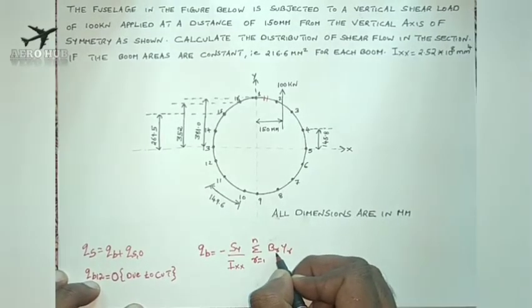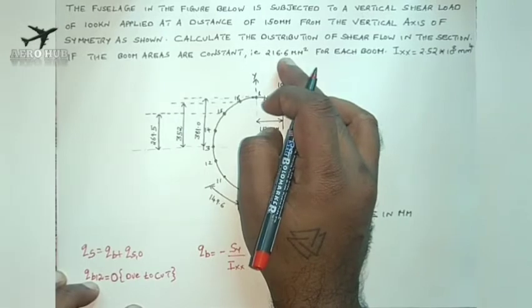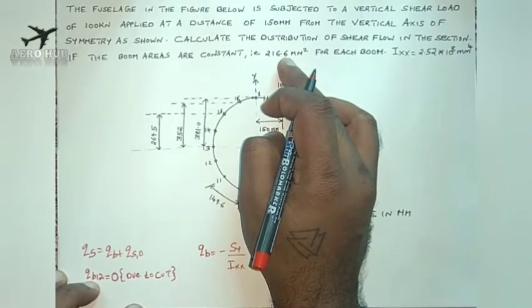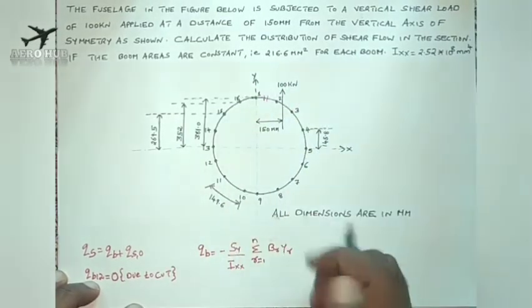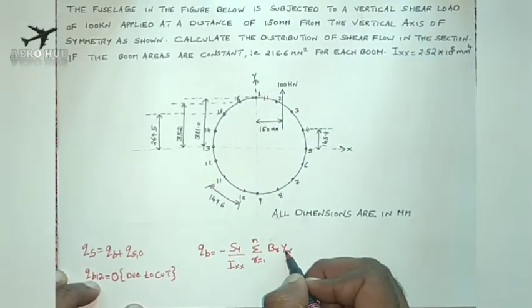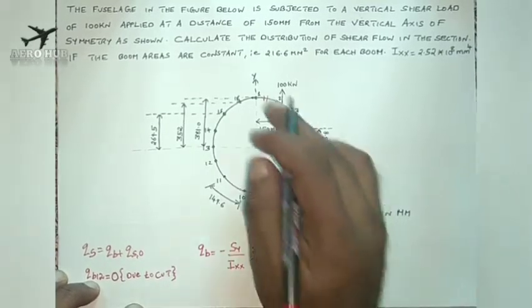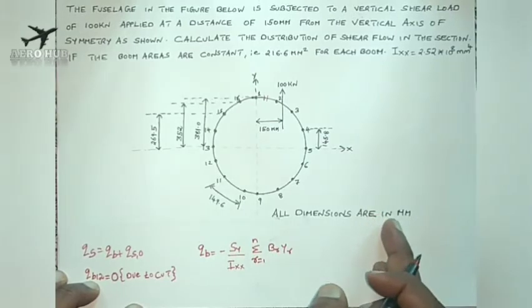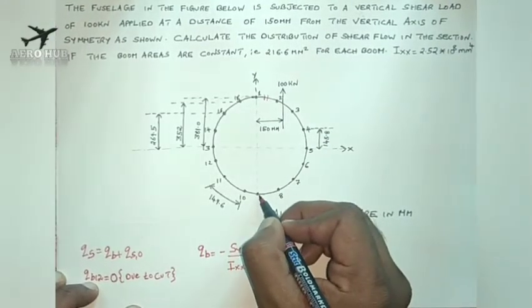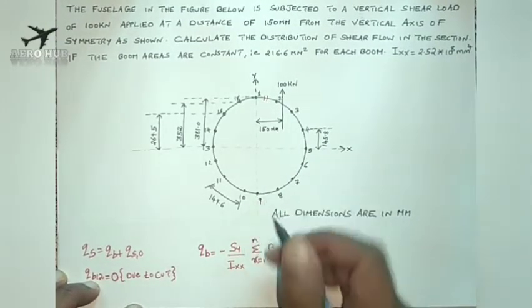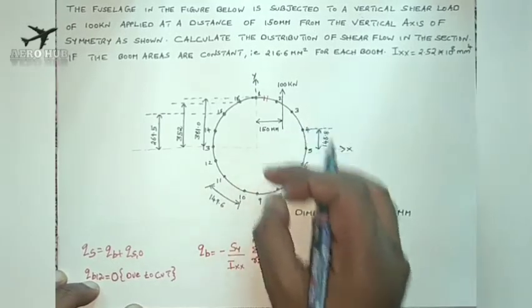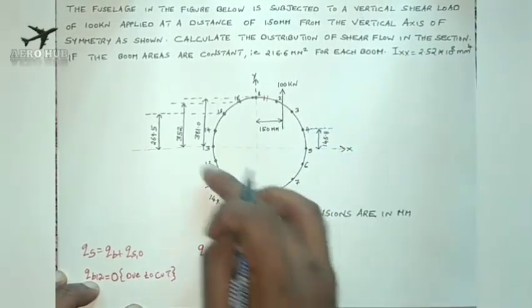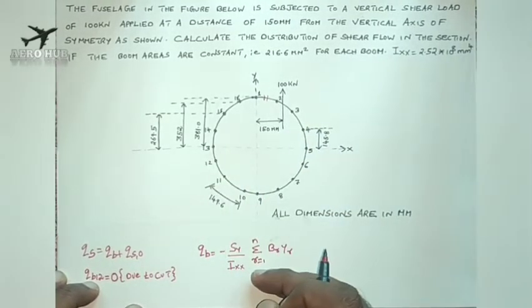BR is the boom area, given as 216.6 mm squared for each boom, and YR is the distance from the neutral axis. For example, for boom 1, the distance is given as 381 mm. For boom 9, the distance Y will be minus 381 because boom 9 is below the neutral axis.